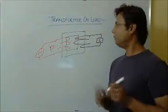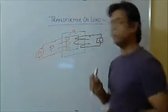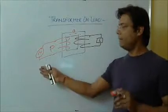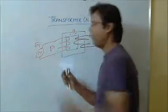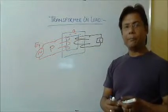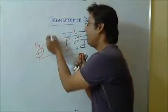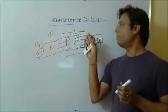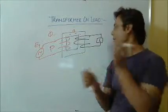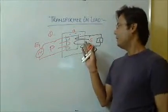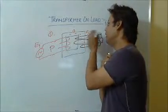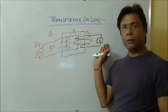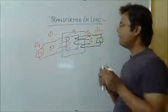What happens is that phi passes through the core, which is getting generated because of the primary winding energized by the supply. E1, the EMF in the primary winding, causes phi to be generated, which passes through the core and gets linked with the secondary. This secondary has E2 generated, and when the secondary is not open circuit but connected to a load, a current I2 starts flowing.